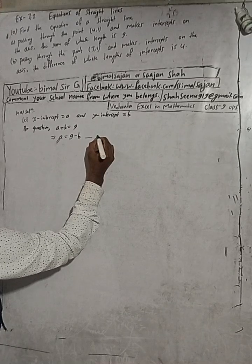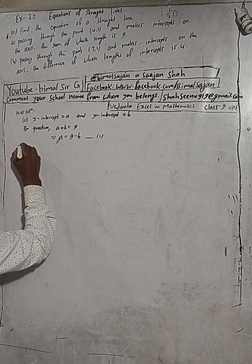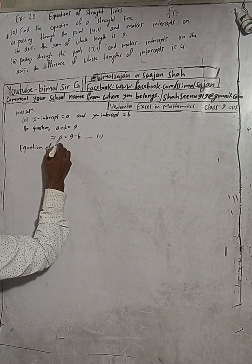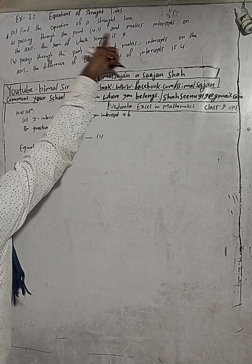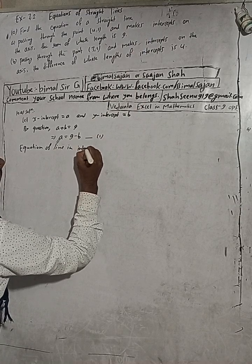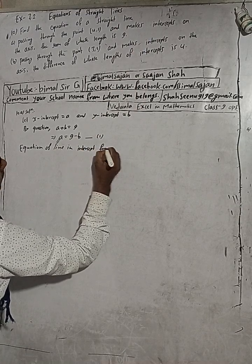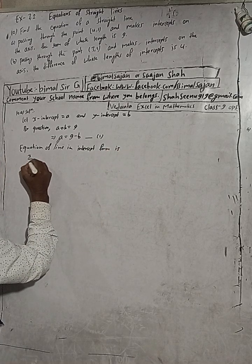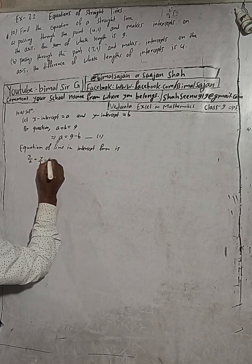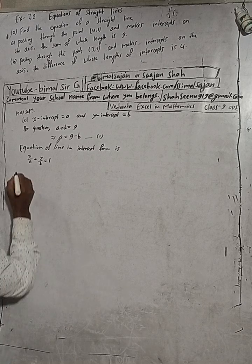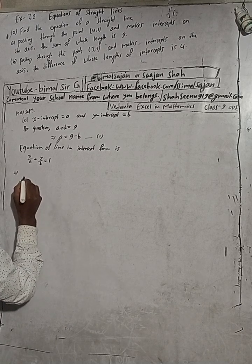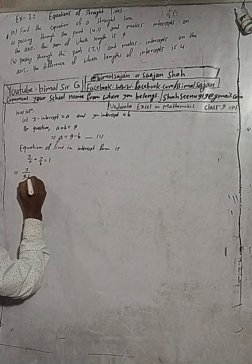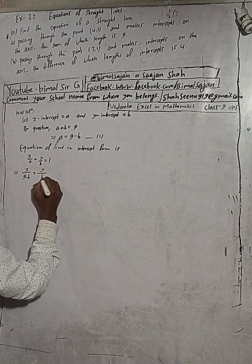Now we write the equation of the line in intercept form. The equation of a line in intercept form is x/a + y/b = 1. In place of 'a' we substitute 9 minus b, giving us x/(9 - b) + y/b = 1.